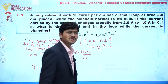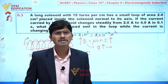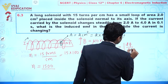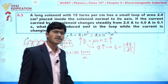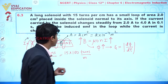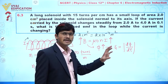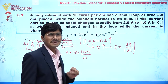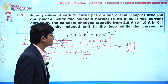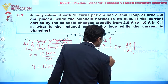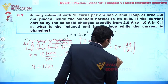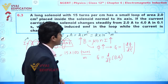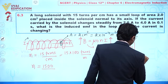Whenever there is a change in magnetic flux, an induced EMF will be developed. This is given by e = dφ/dt. Since φ = BA and the area of the small loop is not changing, we can write e = A · dB/dt.